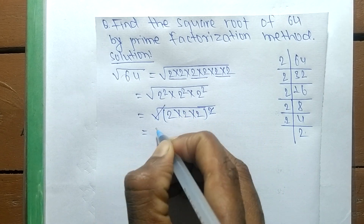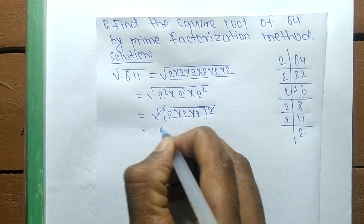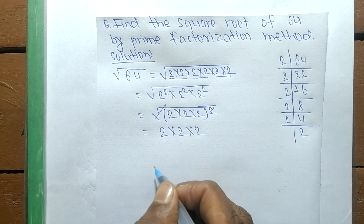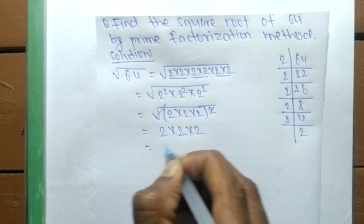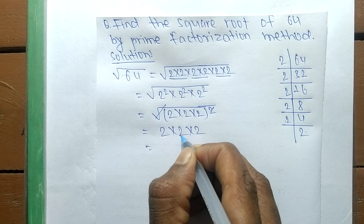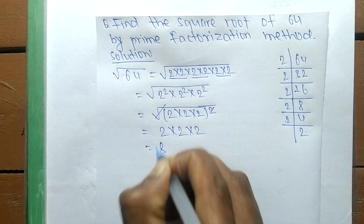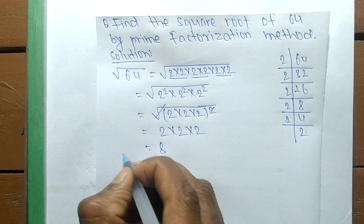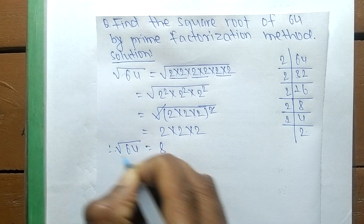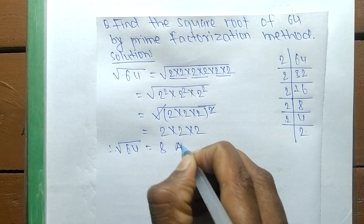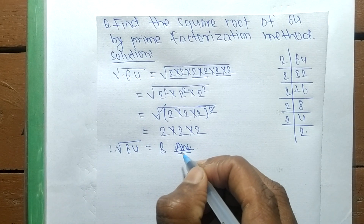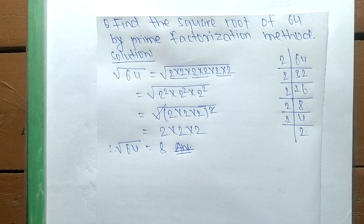After canceling the square root and the square, the numbers that come out are 2 into 2 into 2. The product is 2 times 2 equals 4, and 4 times 2 equals 8. So the square root of 64 is equal to 8. Thanks for watching.